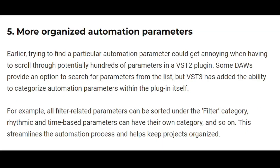More organized automation parameters. Previously, finding a particular automation parameter could be annoying when scrolling through hundreds of parameters in a VST2 plugin. VST3 adds the ability to categorize automation parameters within the plugin itself. In FL Studio, we already have 'last tweaked,' which has circumvented VST2's limitations. For something like Omnisphere, manually choosing from a huge list without last tweaked would have been a nightmare — so shout out to FL Studio for having features that make these VST3 improvements feel less impactful.